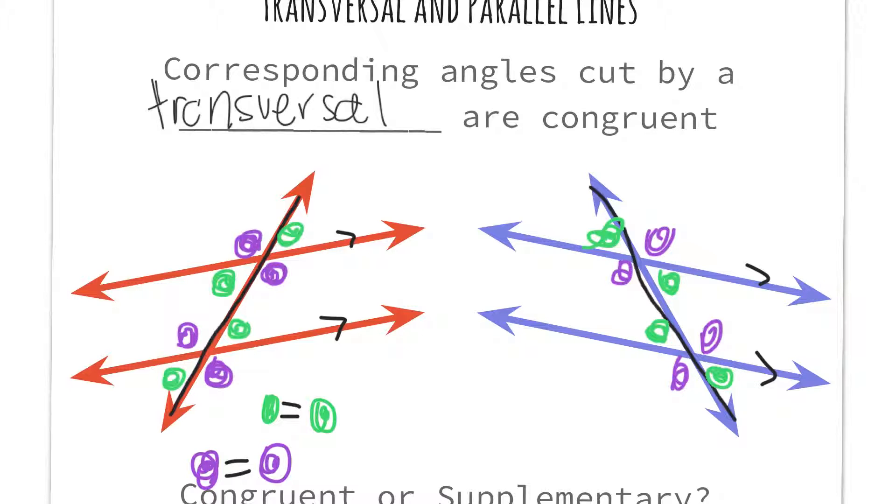Contrary to that, anything that is purple plus green is going to give you 180. So let's say I do this purple plus this green, that is going to give me 180, or let's say this green plus this purple, that's going to give me 180. But if I did this purple with this purple, those are going to be the exact same.